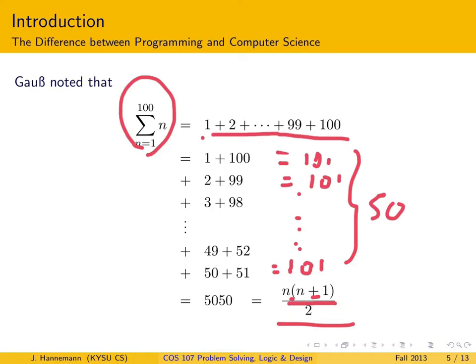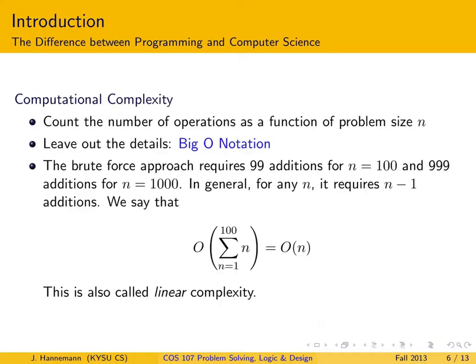Computer scientists have formalized this kind of thing — we call it computational complexity. To solve a problem, you count the number of operations as a function of the problem size n, leave out the nitty gritty details, and come up with what's called the big O notation, where big O stands for 'in the order of.' The brute force approach requires 99 additions for n=100. If you increase n to 1000 — 10 times as much — it takes roughly 10 times the work. For any n, it requires n-1 additions, specified in big O notation as O(n), and we call this linear complexity. If I double the size of a problem, I roughly double the work.